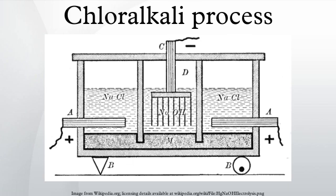Saturated brine is passed into the first chamber of the cell where the chloride ions are oxidized at the anode, losing electrons to become chlorine gas: 2Cl⁻ → Cl₂ + 2e⁻. At the cathode, positive hydrogen ions pulled from water molecules are reduced by the electrolytic current to hydrogen gas, releasing hydroxide ions into the solution: 2H₂O + 2e⁻ → H₂ + 2OH⁻. The ion-permeable ion exchange membrane at the center of the cell allows sodium ions to pass to the second chamber where they react with the hydroxide ions to produce caustic soda.